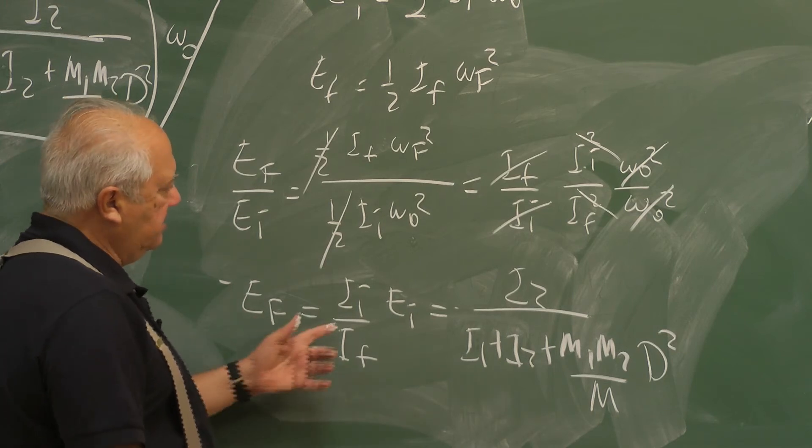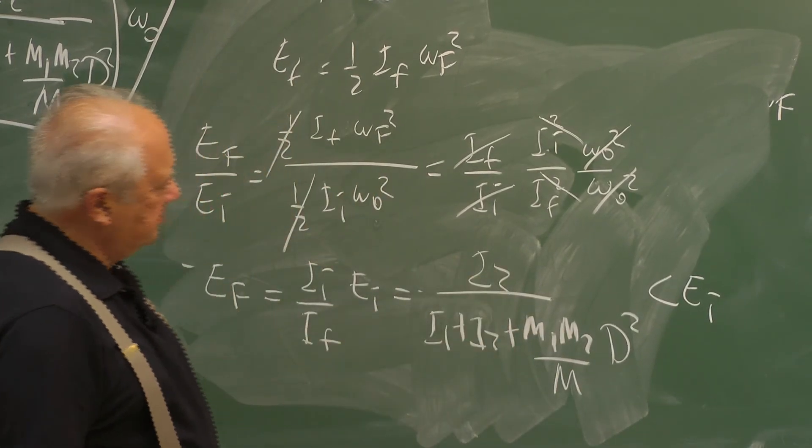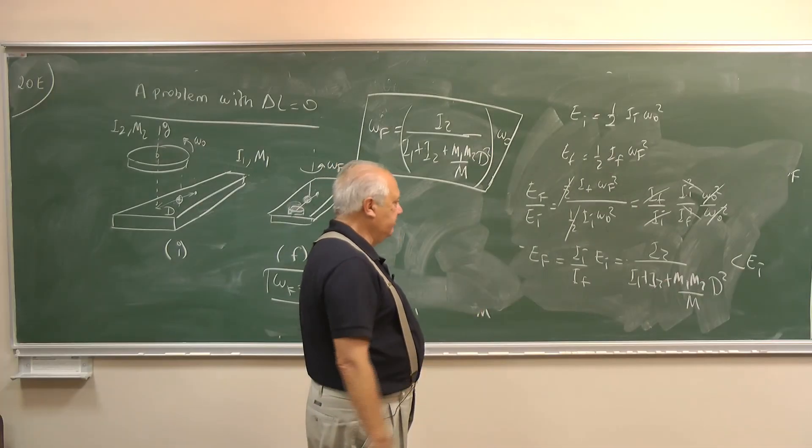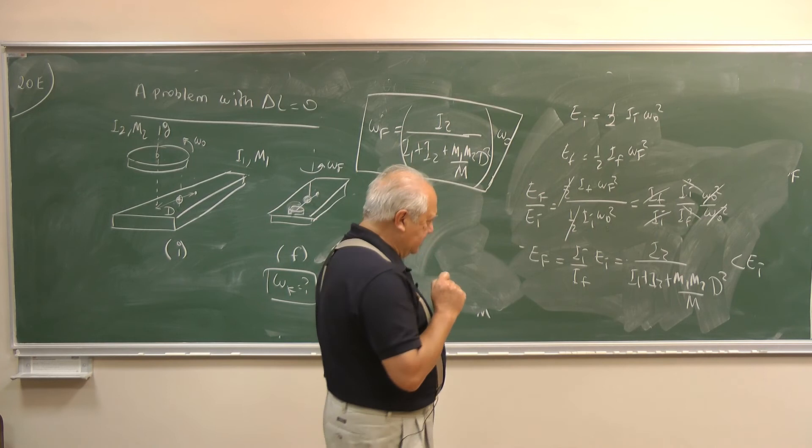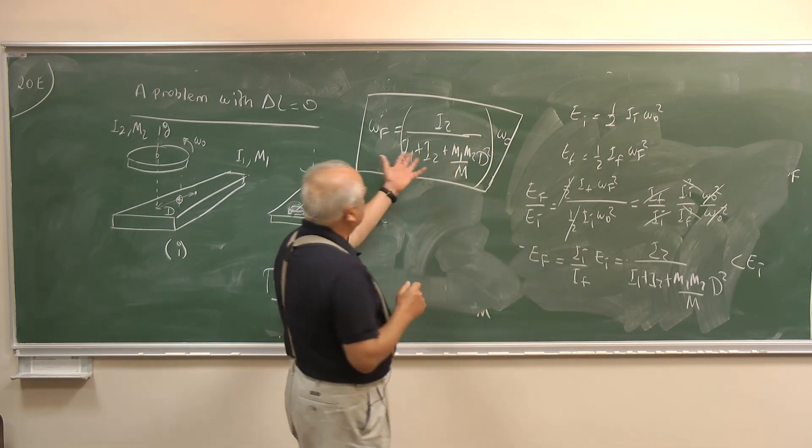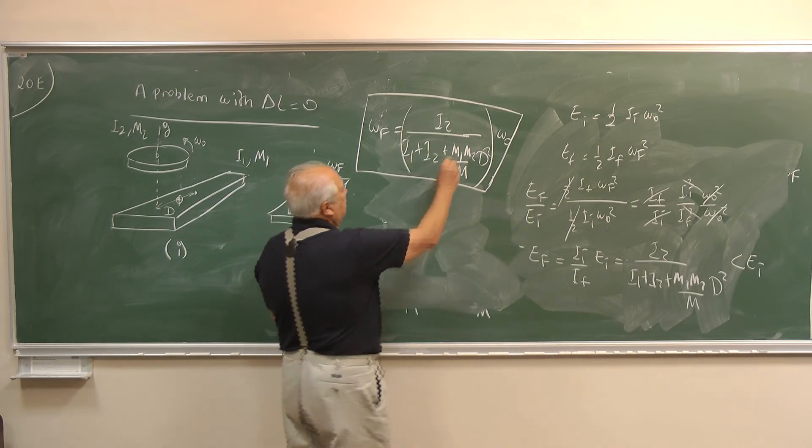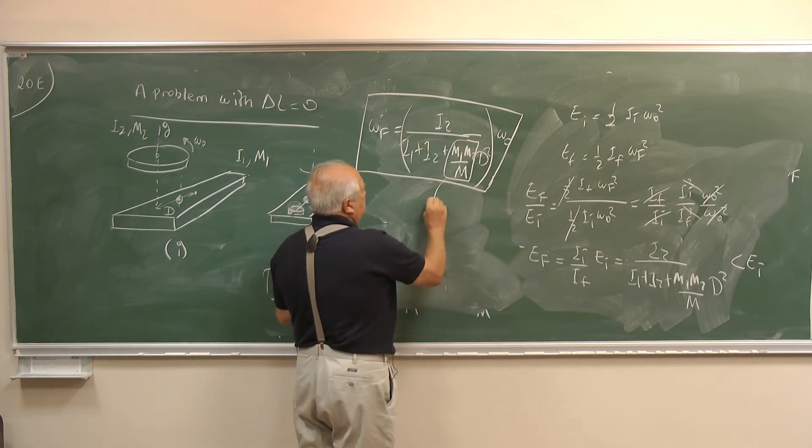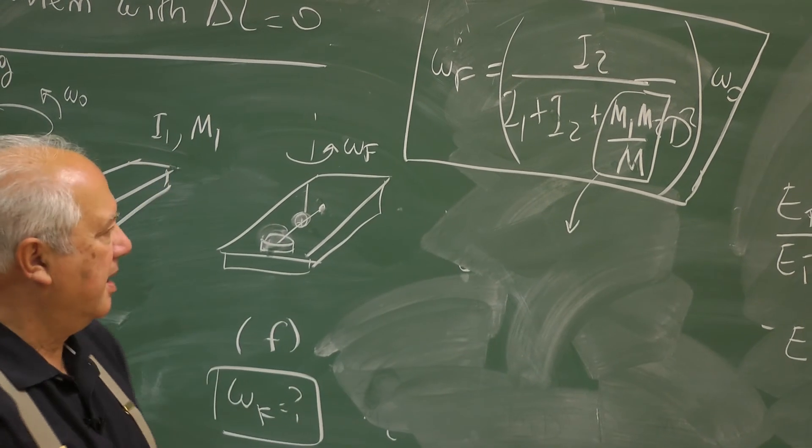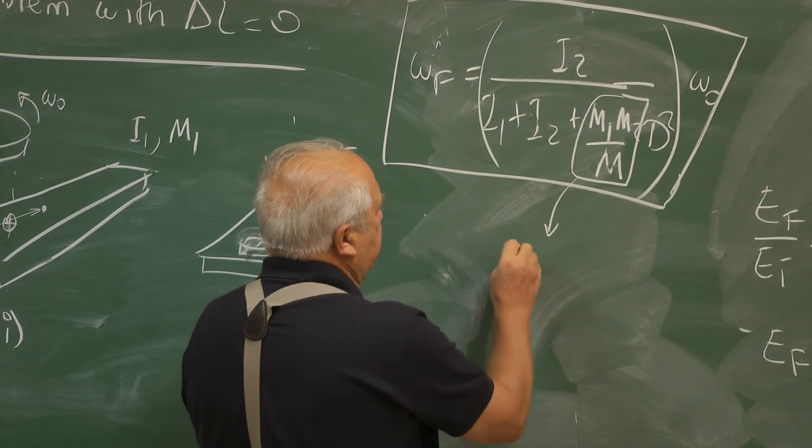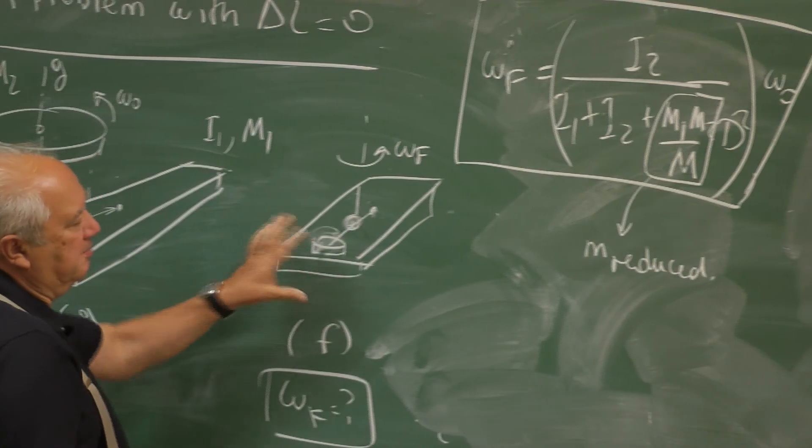EF is obviously smaller than EI. If you plug in the numbers depending on what these things are, is it 40% of the initial energy, 30% of the initial energy, you get numerical value. But now I want to indicate something. If you just look at this formula, you may notice something interesting. This is what we had discussed before in problem 16, is the reduced mass. It is the reduced mass of the disc and the plank.